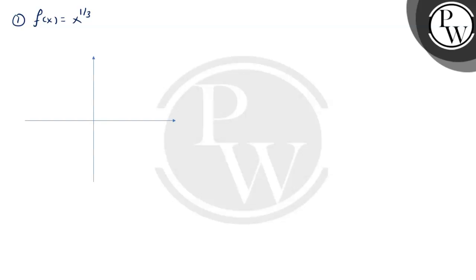Now let's look at the graph of each function one by one. Starting with the first function, cube root of x: we have the x-axis and y-axis, and the graph of f(x) equals cube root of x has its characteristic S-shaped curve passing through the origin.